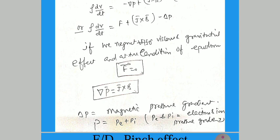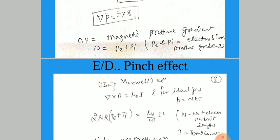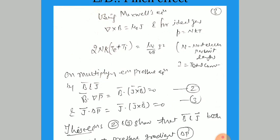Here P = P_e + P_i, where P_e is due to the electron pressure gradient and P_i is related with the ions; both are added to provide the net pressure gradient. Using Maxwell's equations ∇ × B = μ₀J and the ideal gas equation P = nkT, we can write: 2nk(T_e + T_i) = μ₀ / (4π) · I². Here n is the number of electrons per unit length — not volume — and I is the total current.